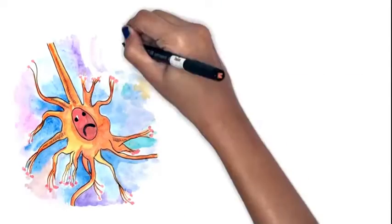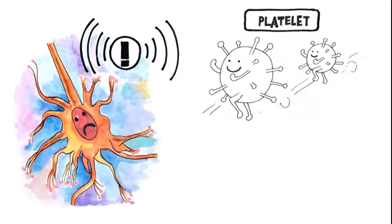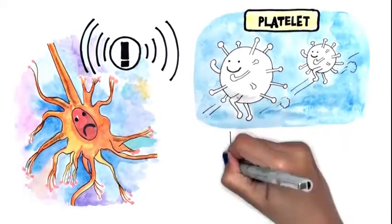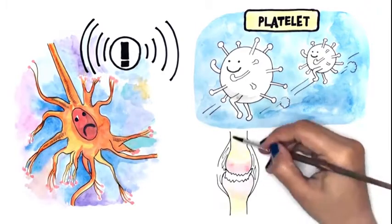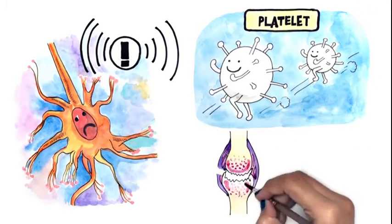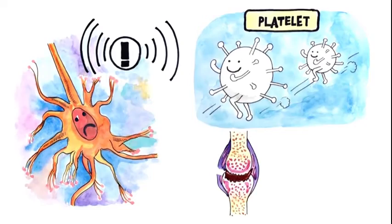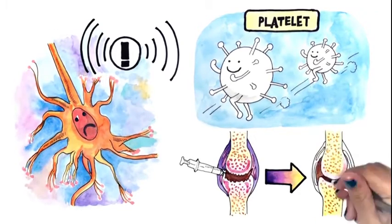Injured cells send off distress signals, attracting the activated platelets brought in through PRP. The newly arrived growth factors now motivate the healthy cells to multiply and replace the injured or dead cells. The healing process is in full gear.